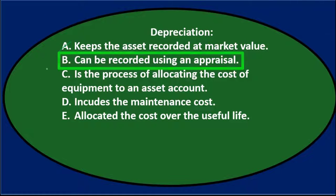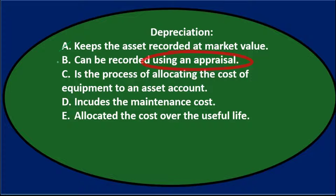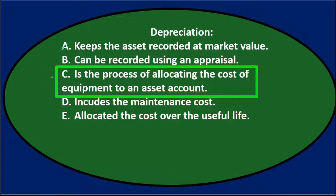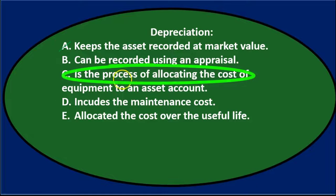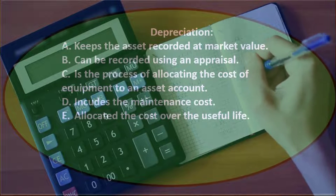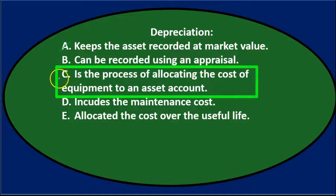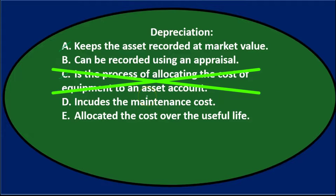B says can be recorded using an appraisal. Typically when we think of depreciation, we might use an appraisal to break it out between different types in a lump sum purchase between land and building. Typically we don't use an appraisal — we just use the cost. I'll keep it for now in case there's no better answer. C: is the process of allocating the cost of equipment to an asset account. It is the process of allocating the cost, but not really to an asset. We're going to allocate the cost to the expense — the timing accounts — when appropriate. That's not going to be C because it's not going to an asset, it's going to expense.